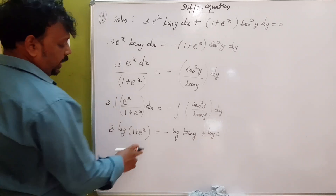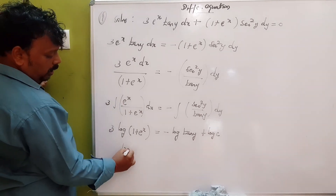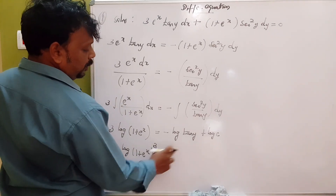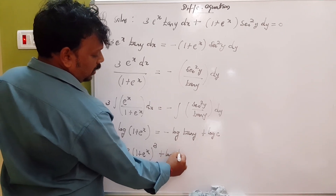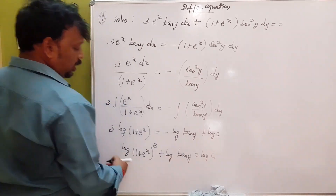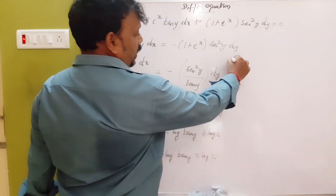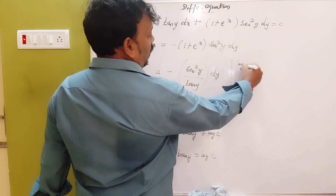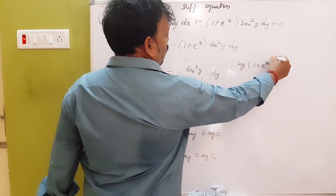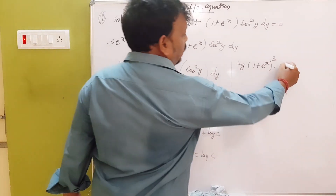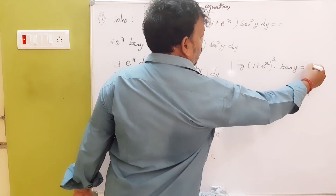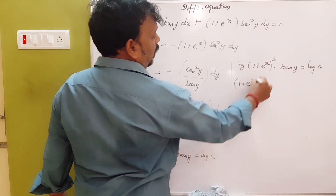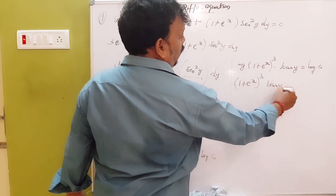Using the log rule: log m to the power n, we get log of 1 plus e to the power x whole cube. Then log of tan y equals log c. Applying log m plus log n rule, the final answer is tan y equal to C times 1 plus e to the power x cubed.